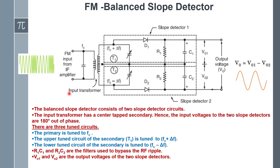The balanced slope detector is also used to detect the message signal from the frequency modulated signal. The fundamental principle of operation is: whatever frequency variation is available in the frequency modulated output will be converted as amplitude variation, then that particular amplitude modulated signal will be applied towards an envelope detector, and finally we get the message signal. This is the overall outline of the operation of the balanced slope detector.